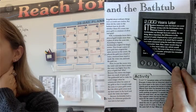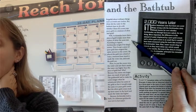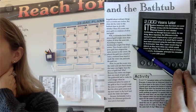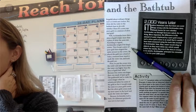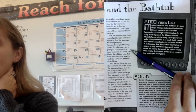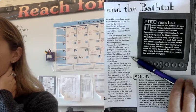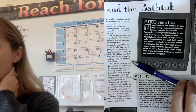Archimedes knew that a piece of gold weighs more than a piece of silver the same size. According to legend, Archimedes weighed the king's crown. Then he got a piece of pure gold that weighed the same amount as the crown. He placed the gold into the bowl of water, measured how much it made the water rise, and took the gold out.